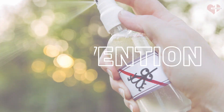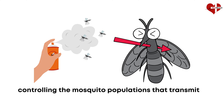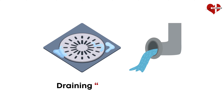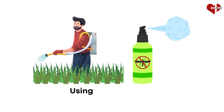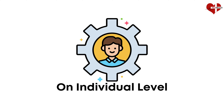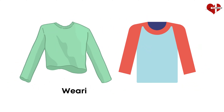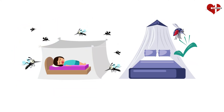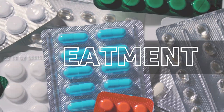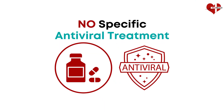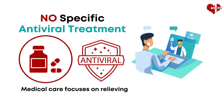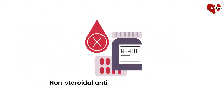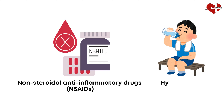Preventing Chikungunya largely depends on controlling the mosquito populations that transmit it. Public health strategies include eliminating breeding sites by draining standing water and using insecticides. On an individual level, people can reduce their risk by wearing long sleeves, using insect repellents containing diethyltoluamide, and sleeping under mosquito nets. There is no specific antiviral treatment for Chikungunya; medical care focuses on relieving symptoms, particularly pain and inflammation, often involving non-steroidal anti-inflammatory drugs, hydration, and rest.